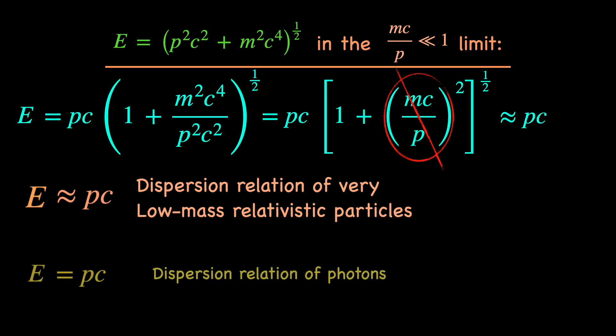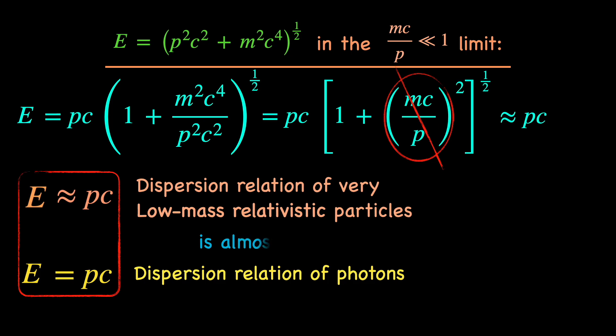Now, E equals pc happens to be the energy momentum relation of a photon too. So, we can say a relativistic particle of sufficiently low mass has an energy momentum relation almost like that of a massless photon. A perfectly nice statement.